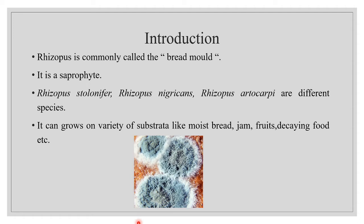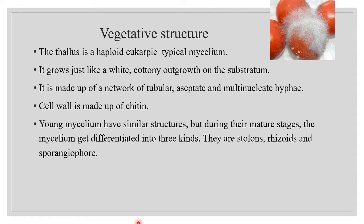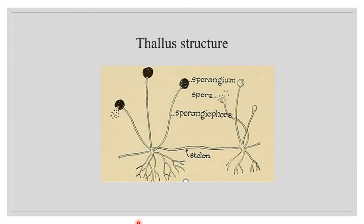Some Rhizopus species act as parasites, causing diseases in plants and animals. The plant body or thallus is a haploid, eucarpic, typical mycelium. It grows as a cottony outgrowth on the substrate, composed of a meshwork of tubular, aseptate, and multinucleate hyphae. The cell wall is made up of chitin. In young mycelium all hyphae are almost alike, but as growth proceeds they differentiate into three types: stolons, rhizoids, and sporangiophores.